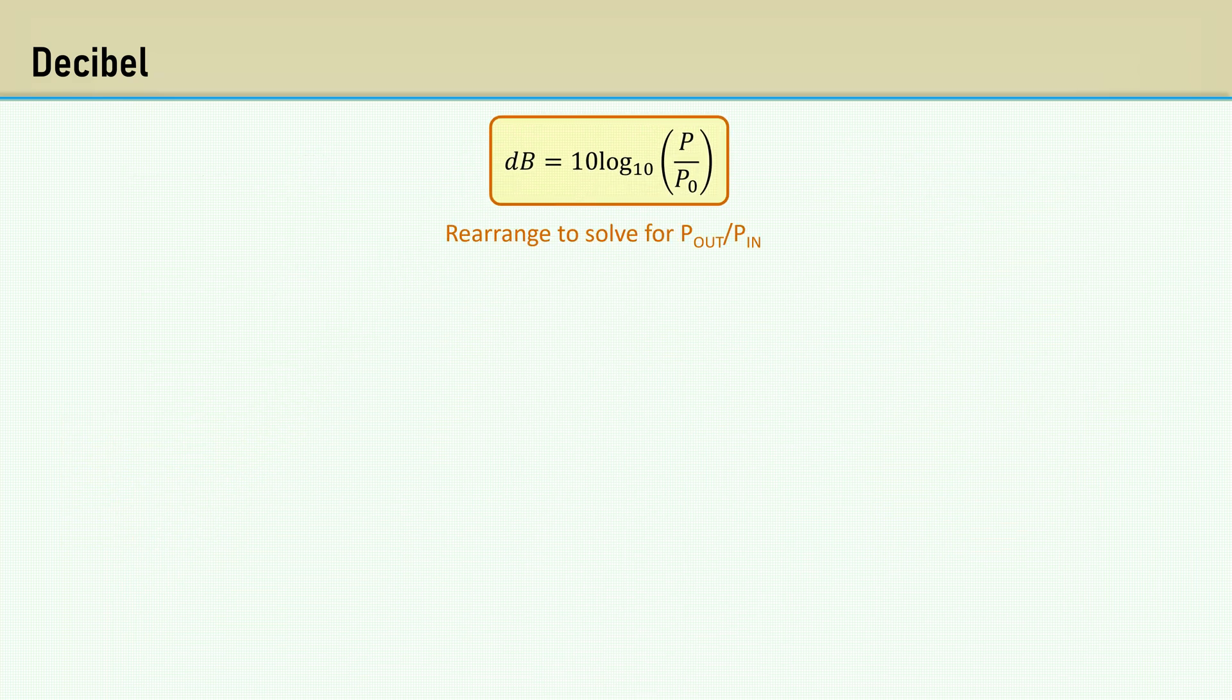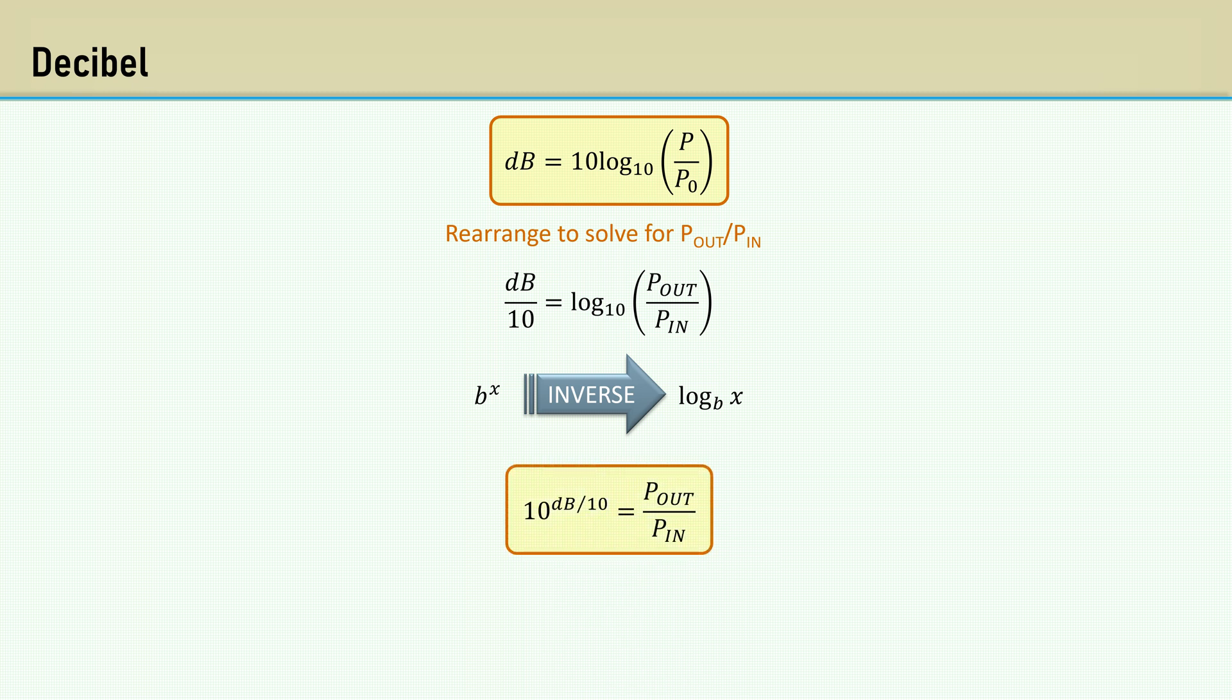If we have a decibel value specified, we would often need to solve for the ratio of powers. Move the 10 over to the left side. B to the power of X is the inverse of the log of X, which is the anti-log. And we get 10 raised to the dB value over 10 for the ratio of powers. For 20 dB, we get a power ratio of 100.